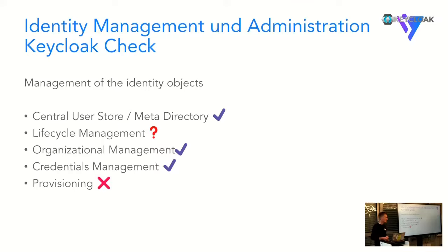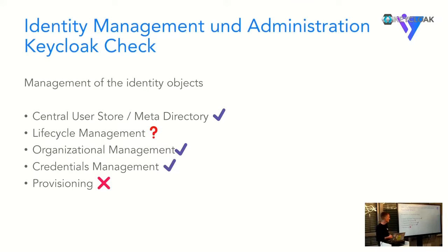Question from the audience: if you have an identity provider link and a user comes in via that identity provider, then the user is created in the Keycloak database - wouldn't you say that's some kind of provisioning? Answer: Yes, that is some kind of provisioning. But Keycloak is not the active part here - it's the receiving end of the identity. This is more a lifecycle management problem, because what happens if the user in the source system no longer exists?